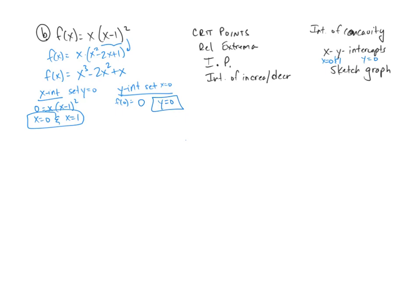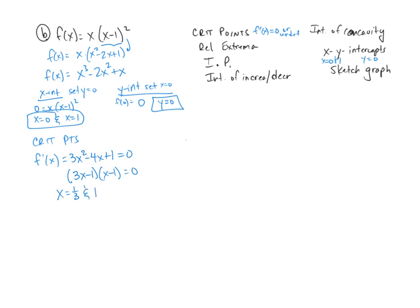For the critical points, we need f prime of x equaling 0 or undefined. Taking the derivative of the expanded form: f prime of x equals 3x squared minus 4x plus 1. Setting equal to 0 and factoring: 3x minus 1 times x minus 1 equals 0. So x equals 1 third and x equals 1 are my critical numbers.